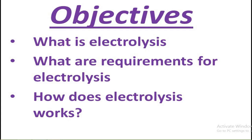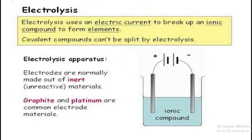To understand how we can do the extraction of metals, we first need to understand electrolysis. Starting with the introduction: the verbal meaning of electrolysis — 'electro' means electric current and 'lysis' means to break. So if we are using electricity to break a compound, it is called electrolysis. Now, not all types of compounds can be broken by using electricity.